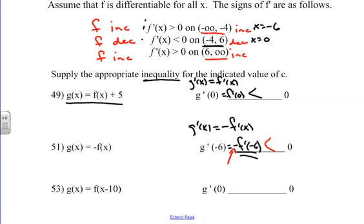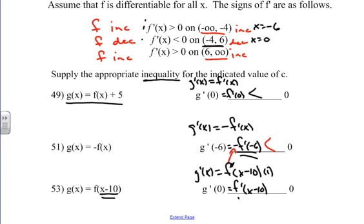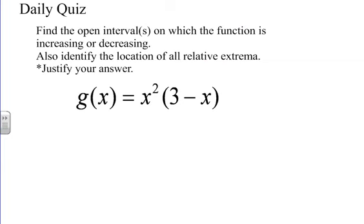For the last one: G of x equals F of x minus 10 — meaning F of x is being shifted right 10 units. To find G prime of x, we use the chain rule: G prime of x equals F prime of x minus 10 times the derivative of the inside, which is 1. So G prime of x equals F prime of x minus 10. Plugging in zero: G prime of zero equals F prime of negative 10. Looking at our chart, x equals negative 10 falls in the interval where f prime is greater than zero.